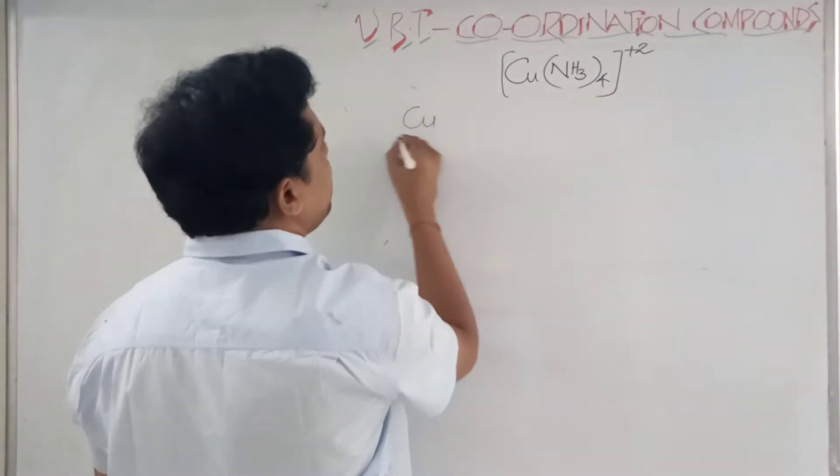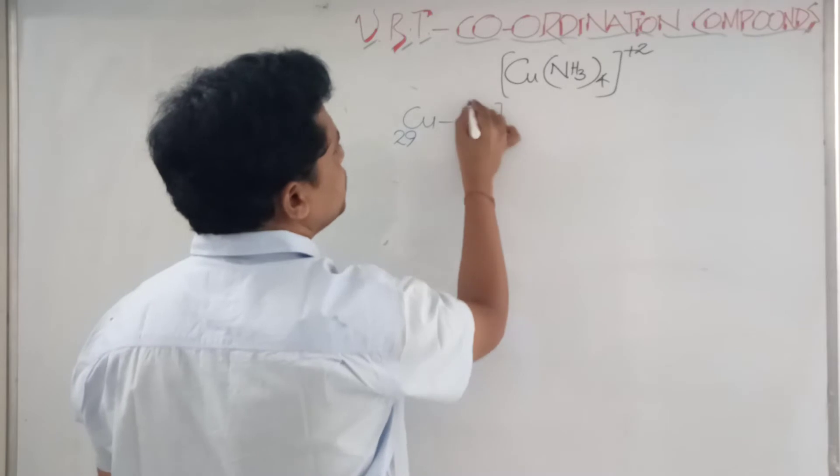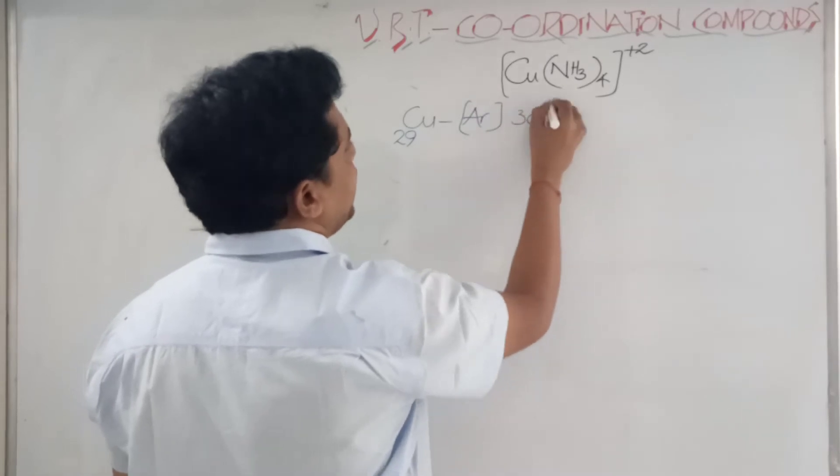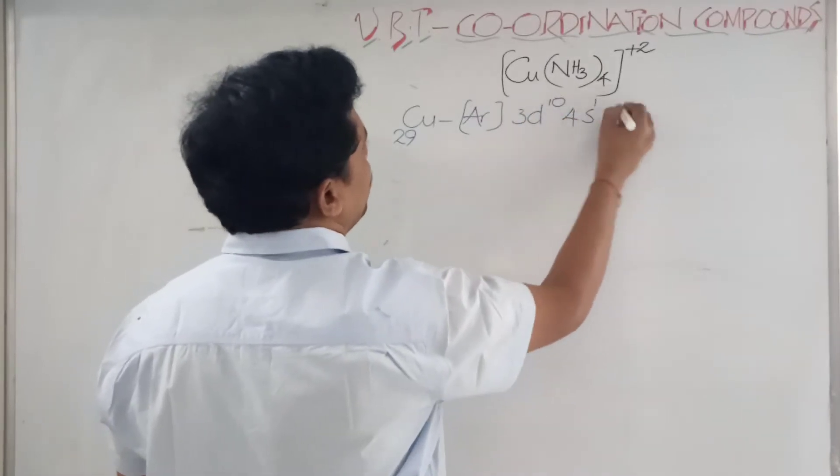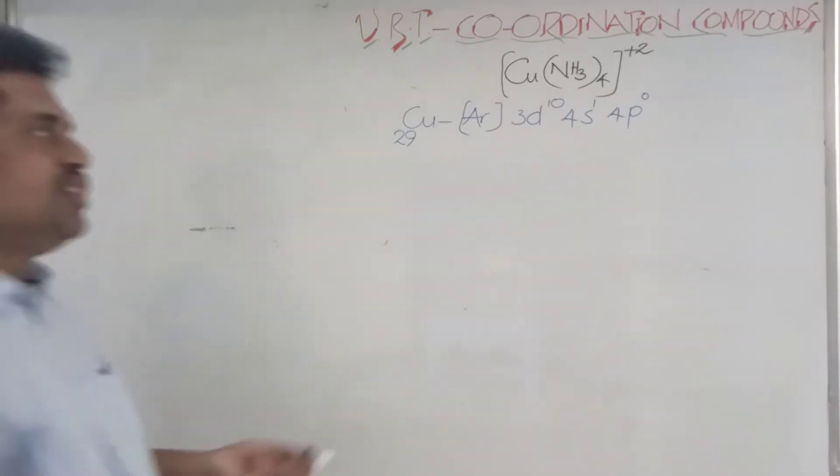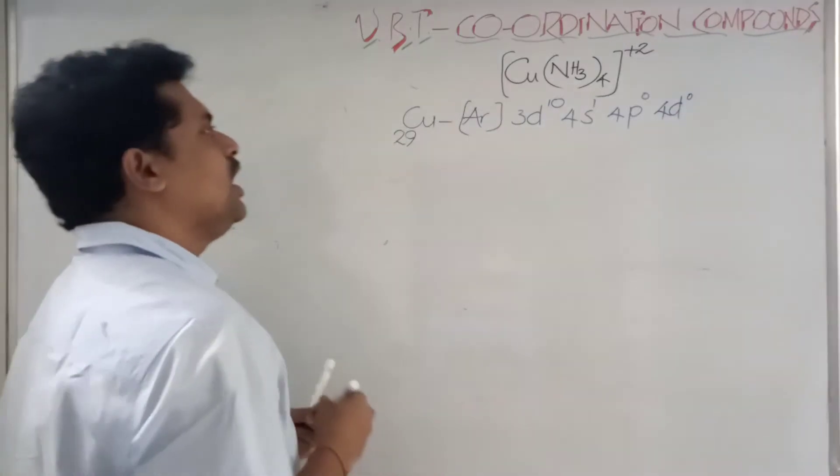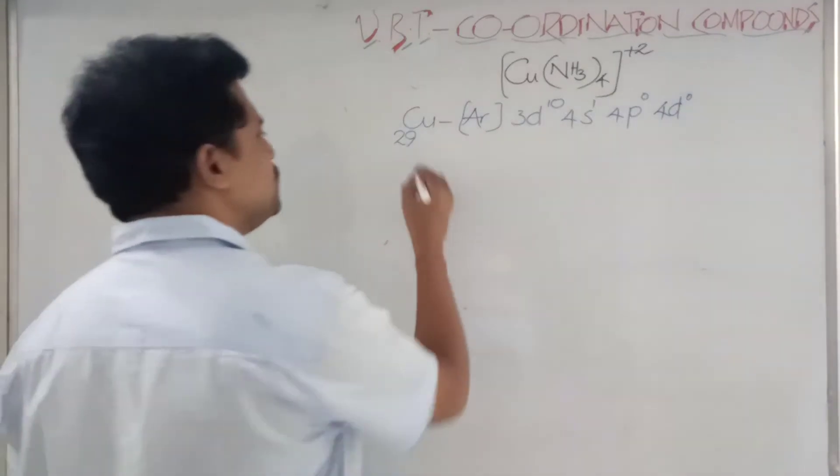Copper atomic number 29, electronic configuration is [Ar] 3d¹⁰ 4s¹ 4p⁰. This is the electron configuration. You can take even 4d, 4d is also zero, no electrons are there. When you are saying copper +2, copper +2 means two electrons are to be removed.